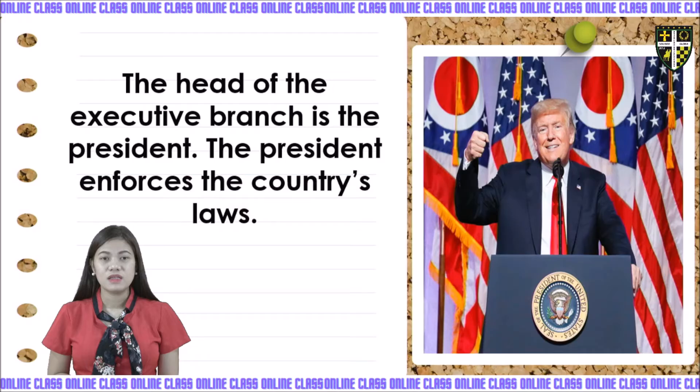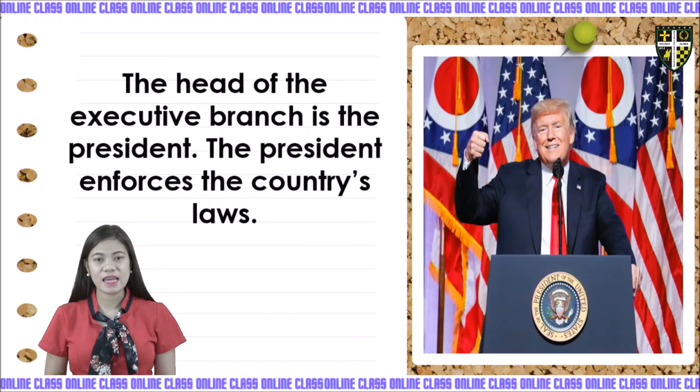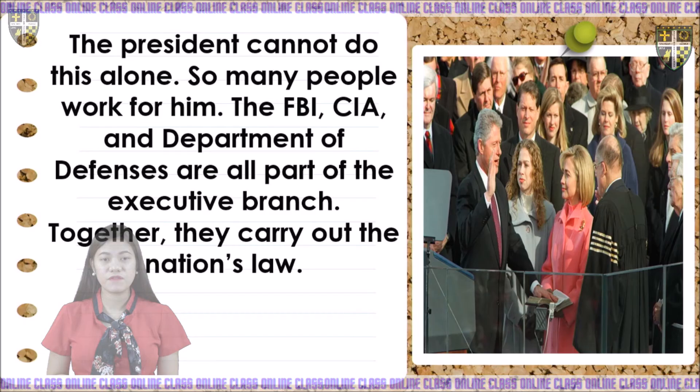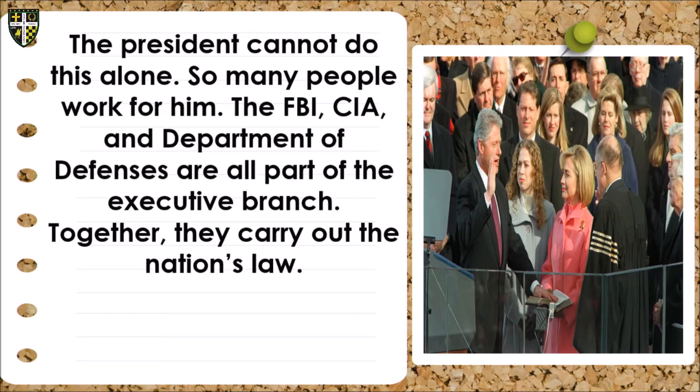The head of the executive branch is the president. The president enforces the country's laws. The president cannot do this alone, so many people work for him. The FBI stands for Federal Bureau of Investigation. We also have CIA and Department of Defense — all part of the executive branch. Together, they carry out the nation's laws.